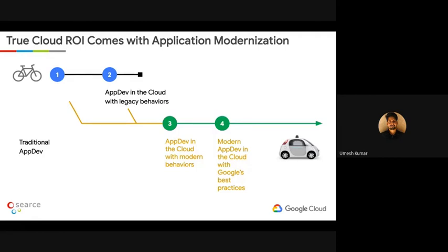Cloud computing started with infrastructure as a service, and the traditional approach of moving to cloud would just put your monolith as-is to the cloud. Then slowly, people moved from monoliths to more stateless applications. Modernization was taking place, and that's when the container world came into picture. The latest evolution is serverless. The true cloud ROI comes only if you are modernizing your applications with the change in technology. If you're still running on VMs and haven't moved to containers, you are lagging behind. Even if you're on containers today and haven't thought about serverless, you need to rethink your approach to application modernization.